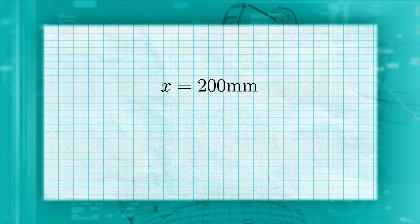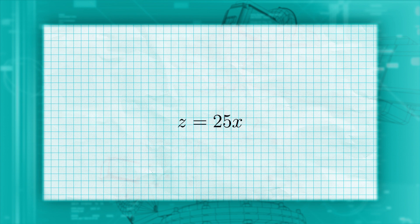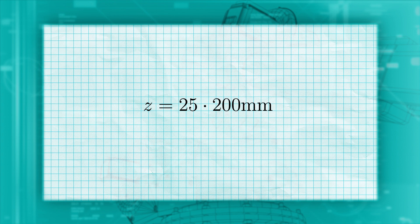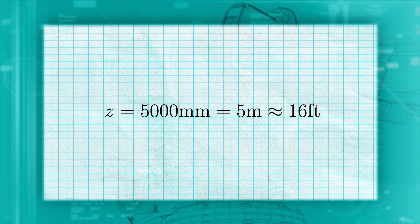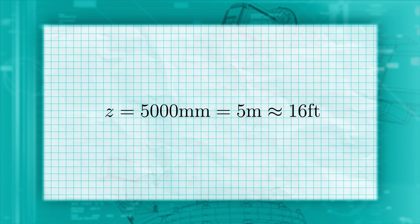Now, substitute that back into either equation to find the Z value. In this case, we'll use the equation for the left camera. And we find that the Z coordinate is 5,000 millimeters, or 5 meters, which is about 16 feet. And that is our answer. The tree is at 5 meters in front of our robot.